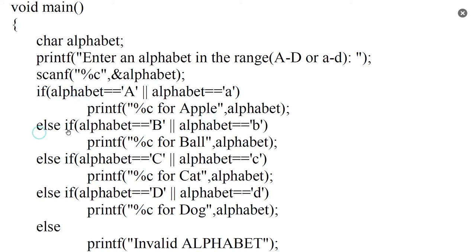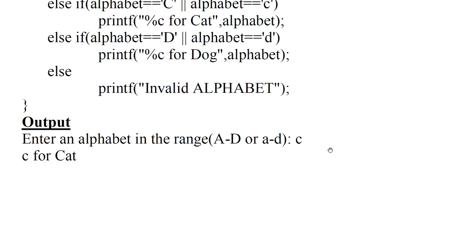Then, if alphabet equals capital B or small letter B, print B for Ball. If alphabet equals capital C or small letter C, print C for Cat. If alphabet equals capital D or small letter D, print D for Dog. Otherwise, display invalid alphabet. Suppose the user enters small letter C — the program displays C for Cat.